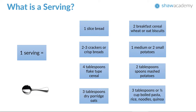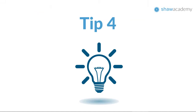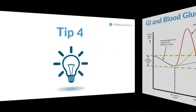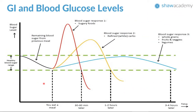Moving on to tip four, we look at glycemic index and its effect on blood glucose levels. The red line on the graph represents high GI or sugary foods — cakes, sweets, biscuits. The green line shows our healthy blood sugar range. When you eat a high GI meal, the red line shoots up rapidly, raising blood sugar levels, and then quickly declines — within 30 minutes to an hour.